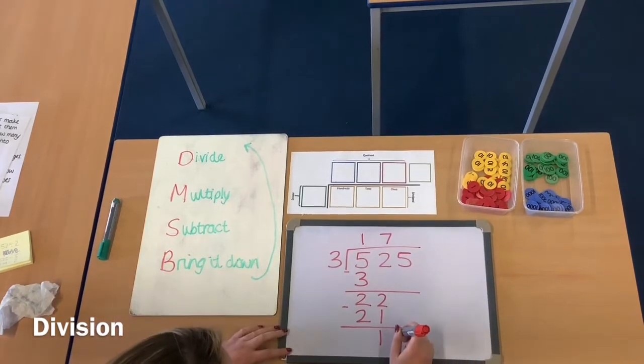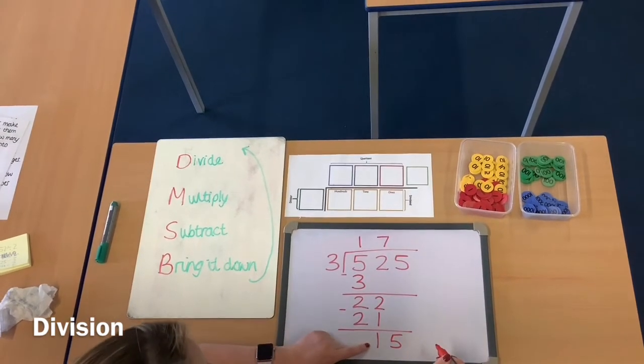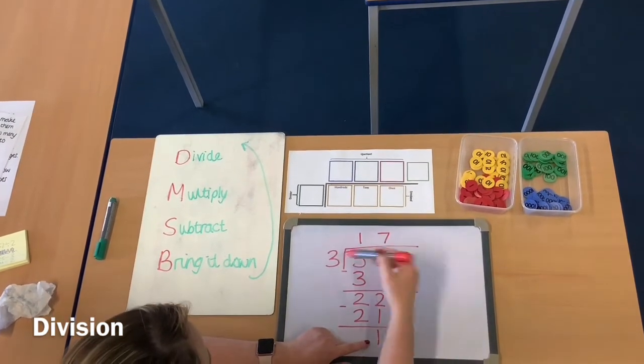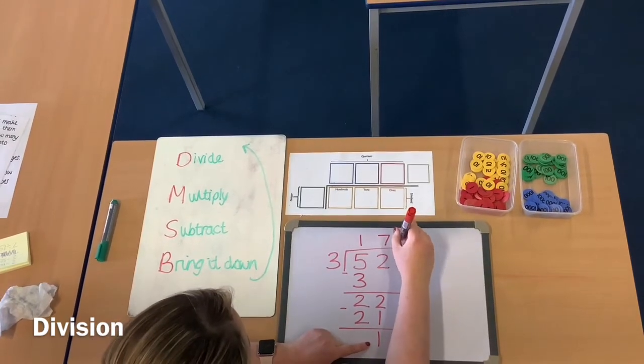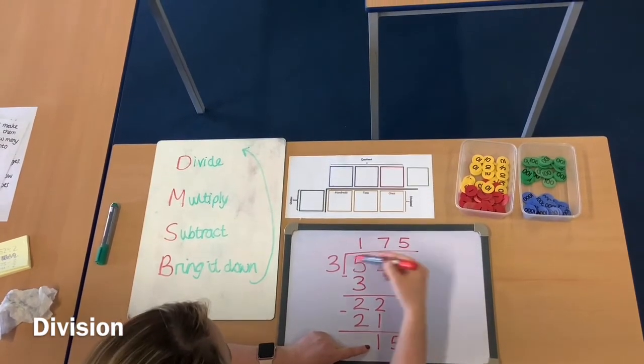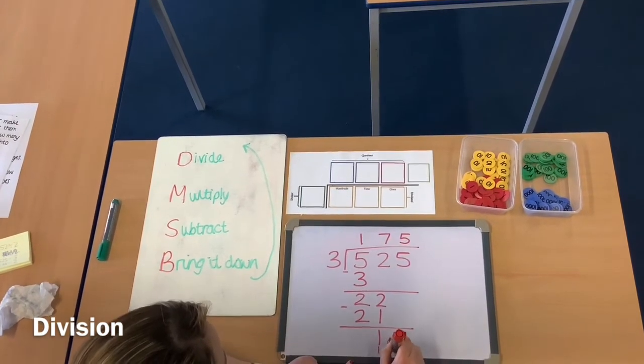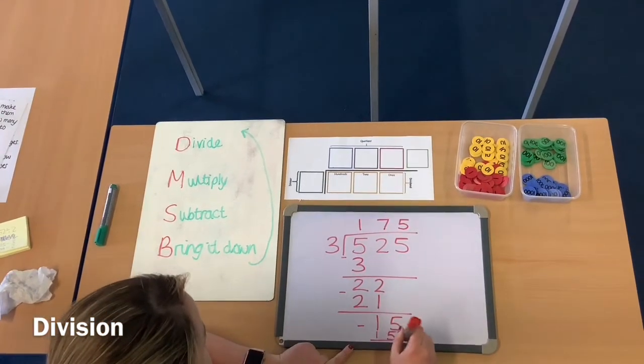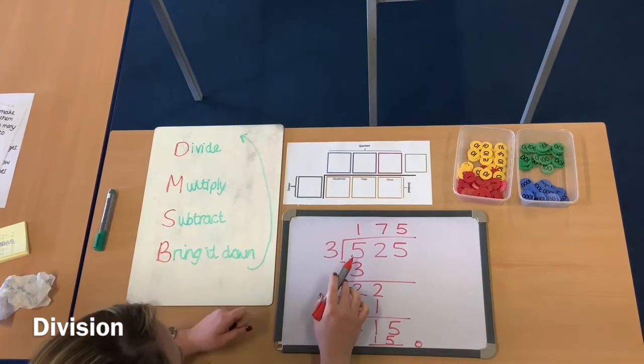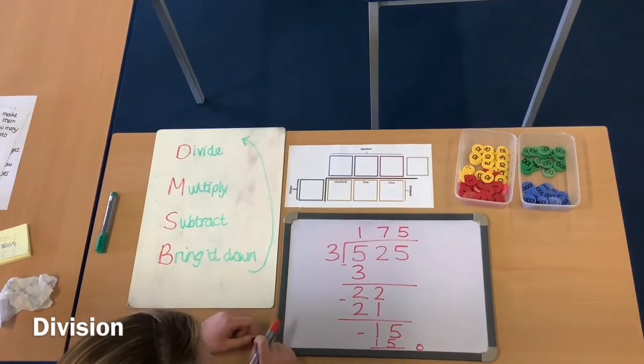So then I've got 5, which I'm going to bring down. So now I've got 15. 15 divided by 3 is 5. To finish it off, 5 times 3 is 15. Running out of space. Subtract. Gives me the answer of 525 with no remainder.